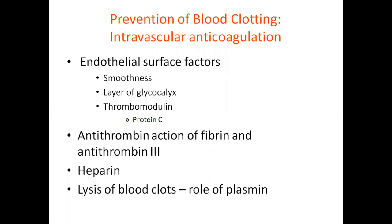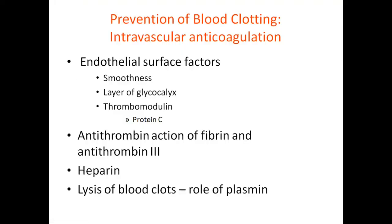Intravascular anticoagulation is the prevention of blood clotting in the normal vascular system. Certain factors prevent blood clotting in the normal vascular system. First are the endothelial surface factors: the endothelial surface is normally smooth and has a glycocalyx layer. Also present on the endothelial surface is thrombomodulin, which combines with thrombin to form a thrombomodulin-thrombin complex, also called protein C. This protein C in turn inactivates factors V and VIII in intravascular coagulation.